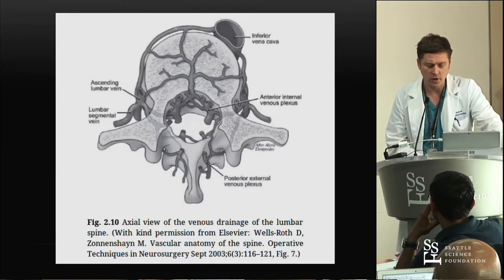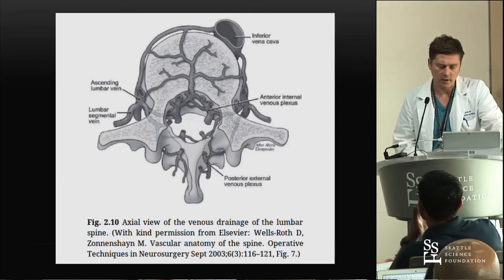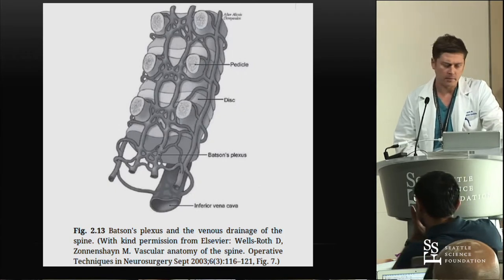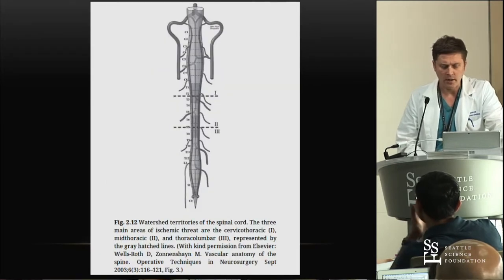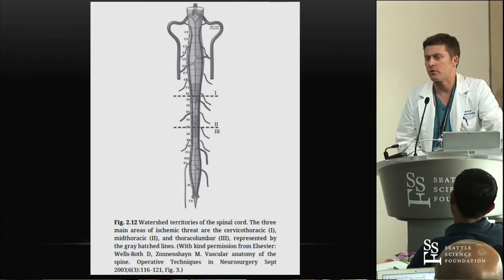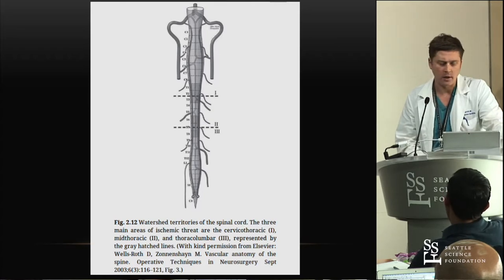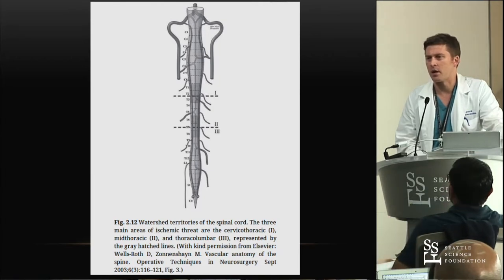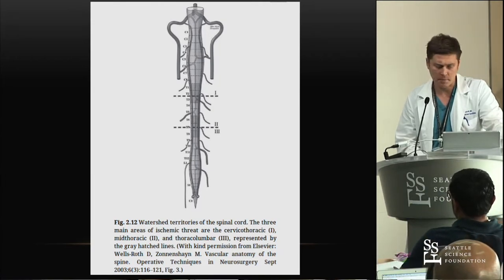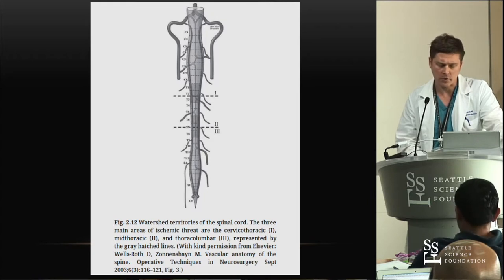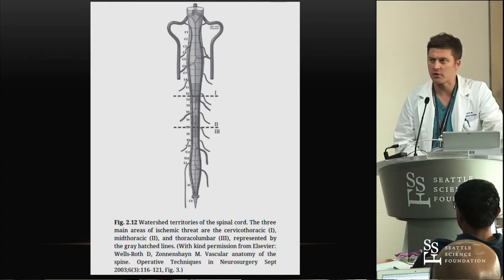It's also important to know the venous drainage. The rich venous plexus is important for the spread of metastatic disease — here's a cartoon of Batson's plexus. On the arterial anatomy, it's important to know where your watershed zones are for deformity correction surgery or long deformity surgeries: the cervicothoracic junction, the mid-thoracic, and the thoracolumbar junction. If you're going to get a spinal cord infarct from prolonged surgery, lots of blood loss, or hypotension, that's where it's going to happen. Increasing blood pressure if you notice changes in neuromonitoring signals, and adequate resuscitation during these large deformity cases, are key.